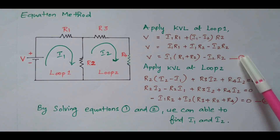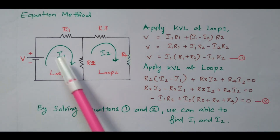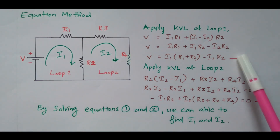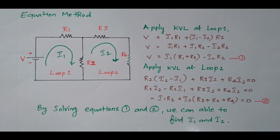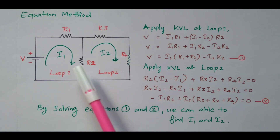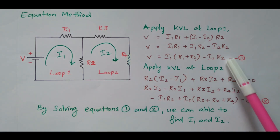Now we have two equations — equation 1 and equation 2 — and we need to find two currents, I1 and I2. By solving these two equations we can easily find the values of I1 and I2. If three loops are available, we frame three equations to find three currents.